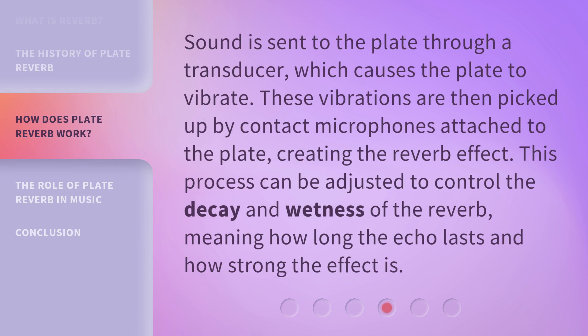Sound is sent to the plate through a transducer, which causes the plate to vibrate. These vibrations are then picked up by contact microphones attached to the plate, creating the reverb effect. This process can be adjusted to control the decay and wetness of the reverb — meaning how long the echo lasts and how strong the effect is.